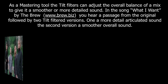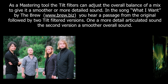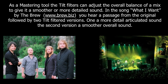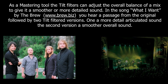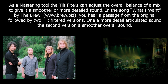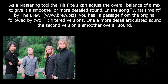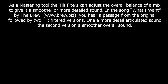As a mastering tool, the tilt filters can adjust the overall balance of a mix to give it a smoother or a more detailed sound. In the song 'What I Want' by The Brew, you hear a passage from the original followed by two tilt-filtered versions: one a more detailed articulated sound, the second a smoother overall sound.